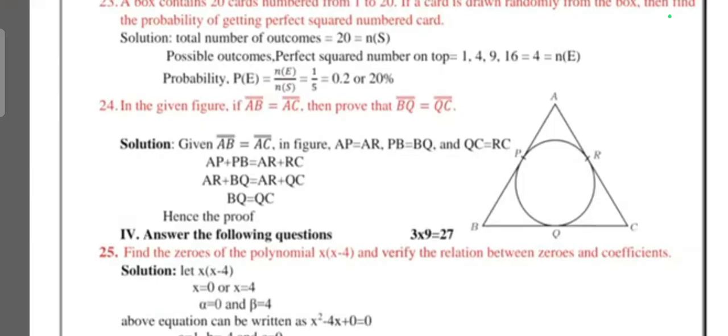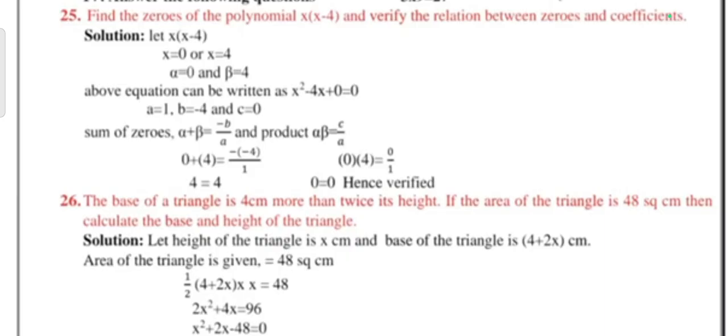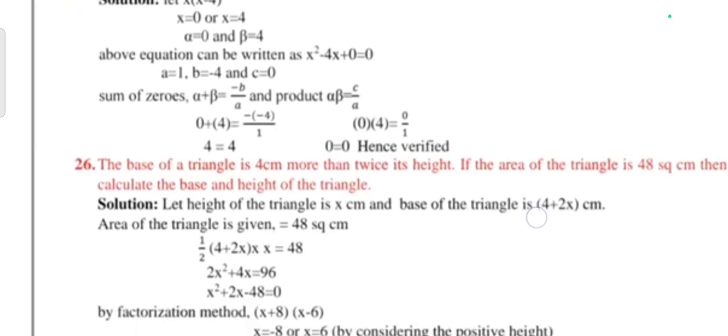Next main has three mark questions. Question 25: Find the zeros of the polynomial x(x - 1) and verify the relation between zeros and coefficients. Question 26: The base of a triangle is 4 centimeters more than twice of its height. If the area of the triangle is 48 square centimeters, then calculate the base and the height of the triangle.